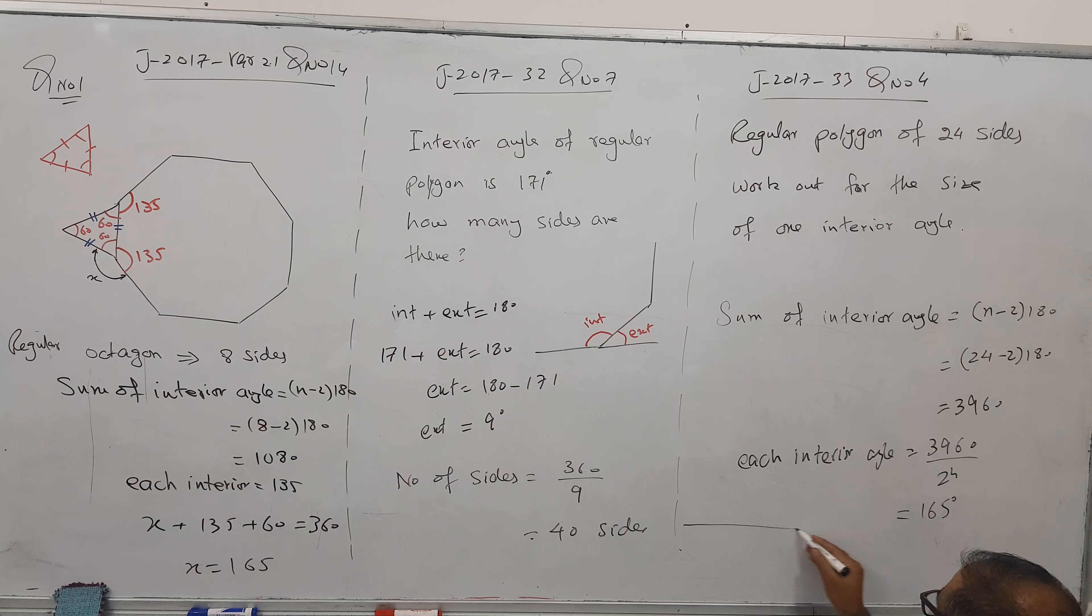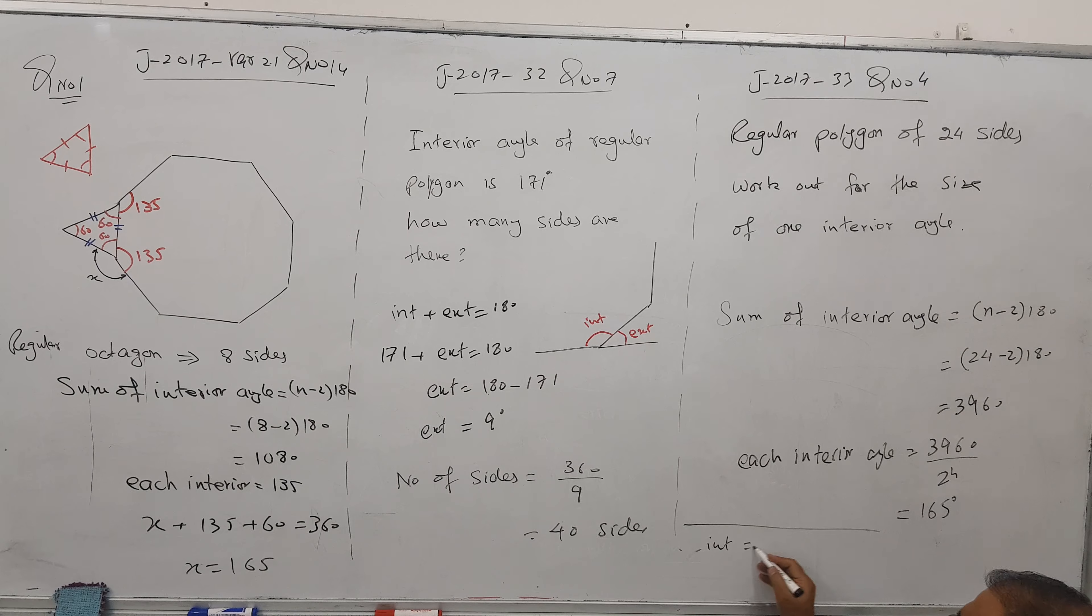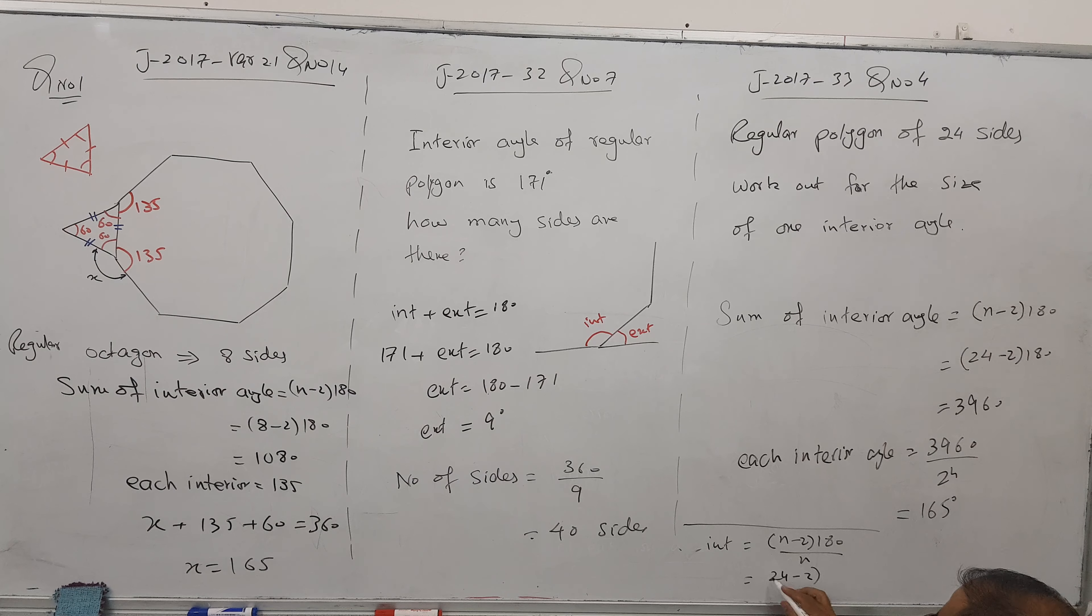But if you want to do direct answer, we have a formula. What is the direct interior angle formula? n minus 2 into 180 divided by n. Put 24 here and here. If you type all together, you get the same answer. So we have two techniques to get this answer, one short and one long.